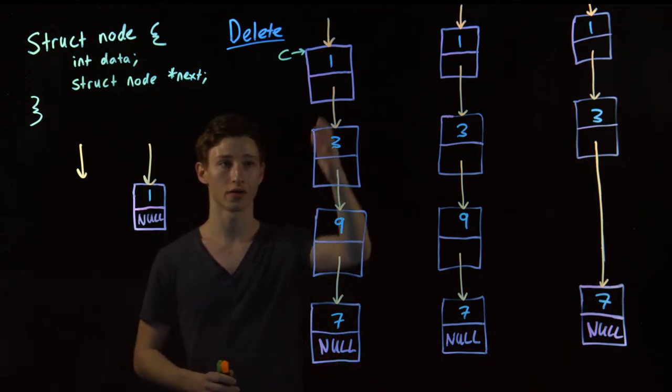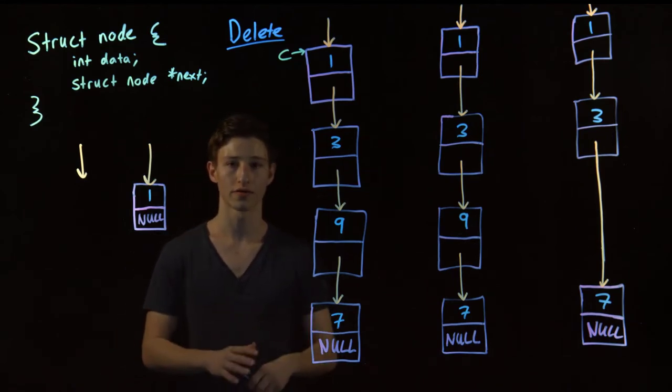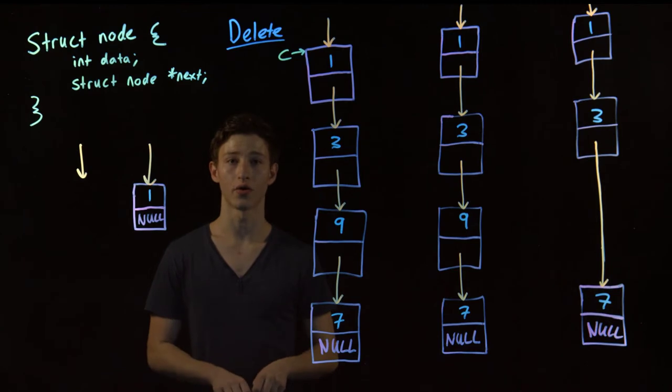We will go to that numbered index, like 3, and delete the third element. Okay, so without further ado, how do we do that? So we need to create a current pointer, which points to the first node. Now, there will be a few cases we'll have to deal with, but we'll get to them as we go.